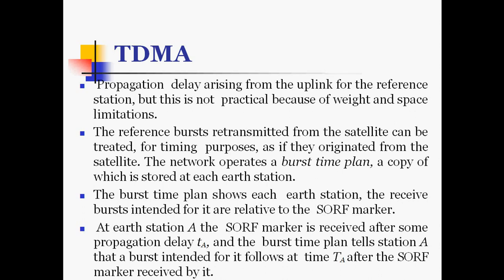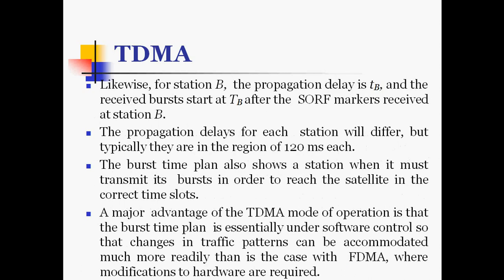The network operates a burst time plan, a copy of which is stored at each earth station. The burst time plan shows each earth station the received bursts intended for it, relative to the SORP (start of receive frame) marker. For earth station A, the start of receive frame marker is received after some propagation delay t_A, and the burst time plan tells station A that the burst intended for it follows at time T_A after the SORP marker. Similarly for station B, the propagation delay is t_B, and the received burst starts at T_B after the SORP marker received at station B. Propagation delays for each earth station differ but typically are in the region of 120 ms.